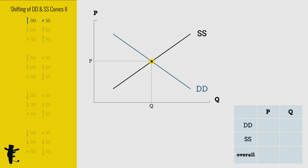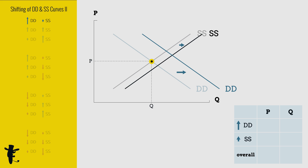Suppose the increase in demand is huge — demand shifts way to the right. The increase in supply is small — supply shifts right just a little. Equilibrium quantity increases. Equilibrium price increases.